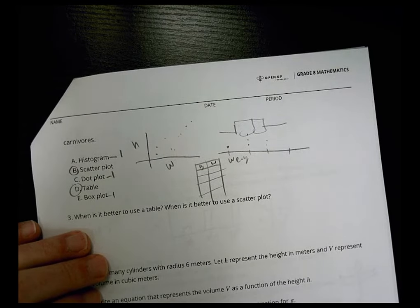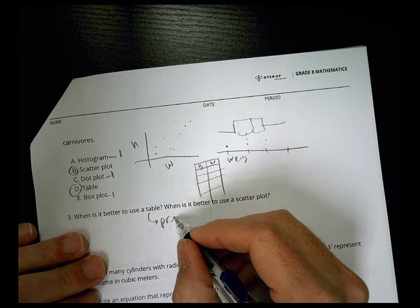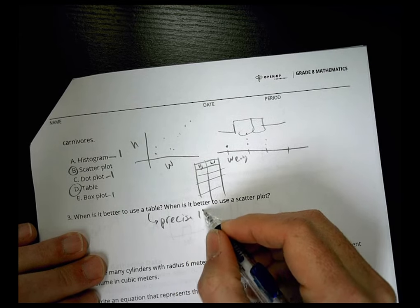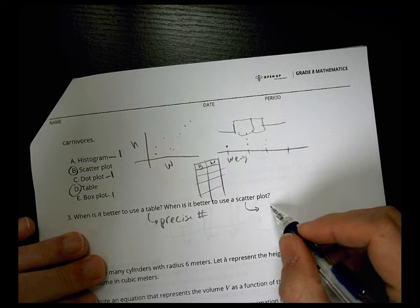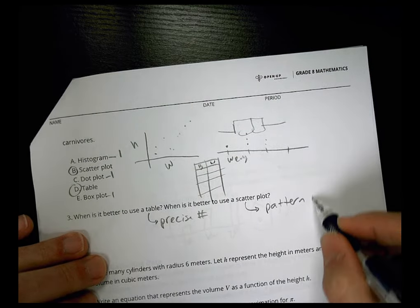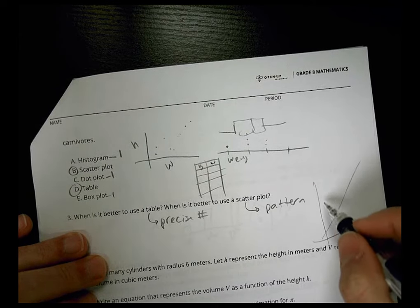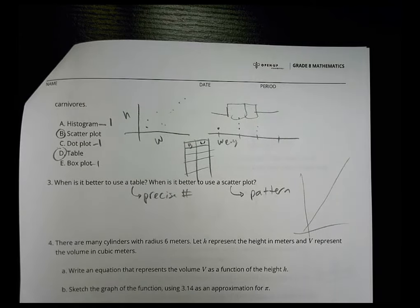So when is it better to use a table? When is it better to use a scatter plot? Well, a table is great when you're looking for very precise numbers, very precise data. But a scatter plot is good when you're looking for a pattern, something that helps you see like it tends to be going this direction or going down. So scatter plots are great visually for a pattern. A table is great when you're looking for precision for exact numbers.